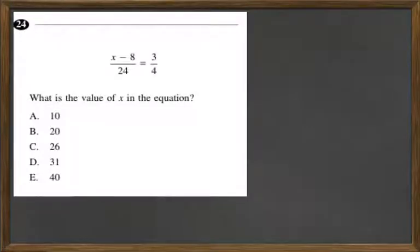What is the value of x in the equation? Let's go ahead and we need to get x by itself. So the first thing we want to do, it's being divided by 24, so let's do the opposite. If we multiply by 24 on this side, that will cancel out.